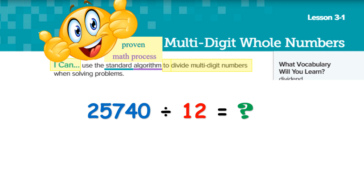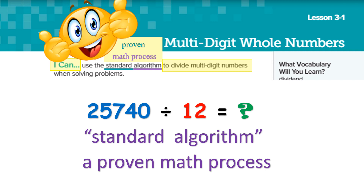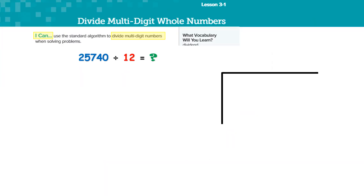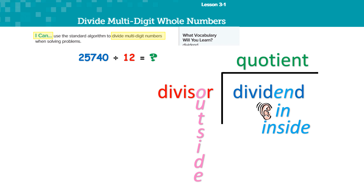When we see a math problem such as 25,740 divided by 12 equals something, that's a standard algorithm — a proven math process that we can follow and fill in the division box. We're going to review quickly the parts of division because in this lesson we need to know it and on your test you'll need to know it. The dividend has the N sound to it, so that's always the number inside our division box. The divisor has the O at the end because it is outside the division box. The quotient is simply my answer.